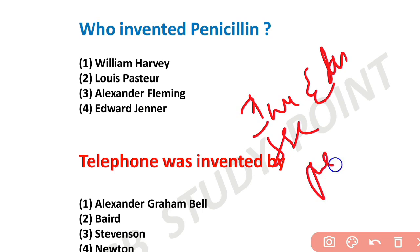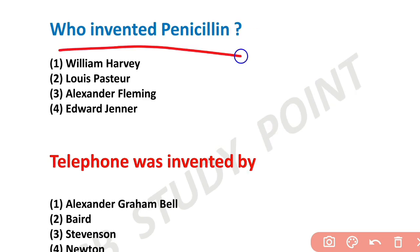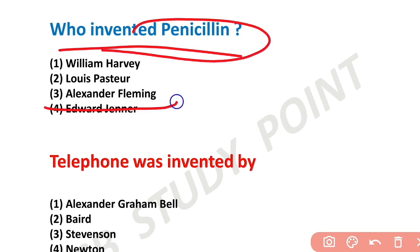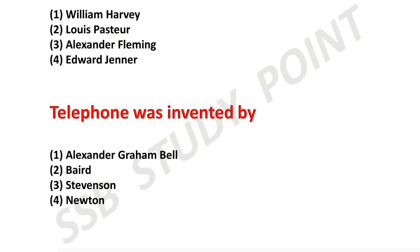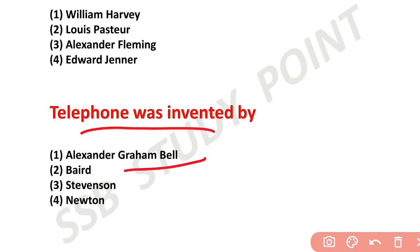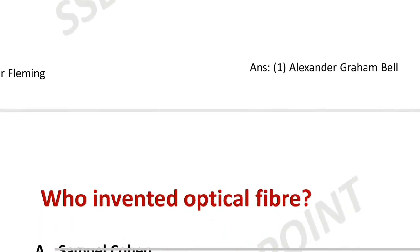First question: Who invented Penicillin? Penicillin is covered in biology class — it is an antibiotic. Penicillin was invented by Alexander Fleming. The next question: Who invented the telephone? The telephone was invented by Graham Bell.